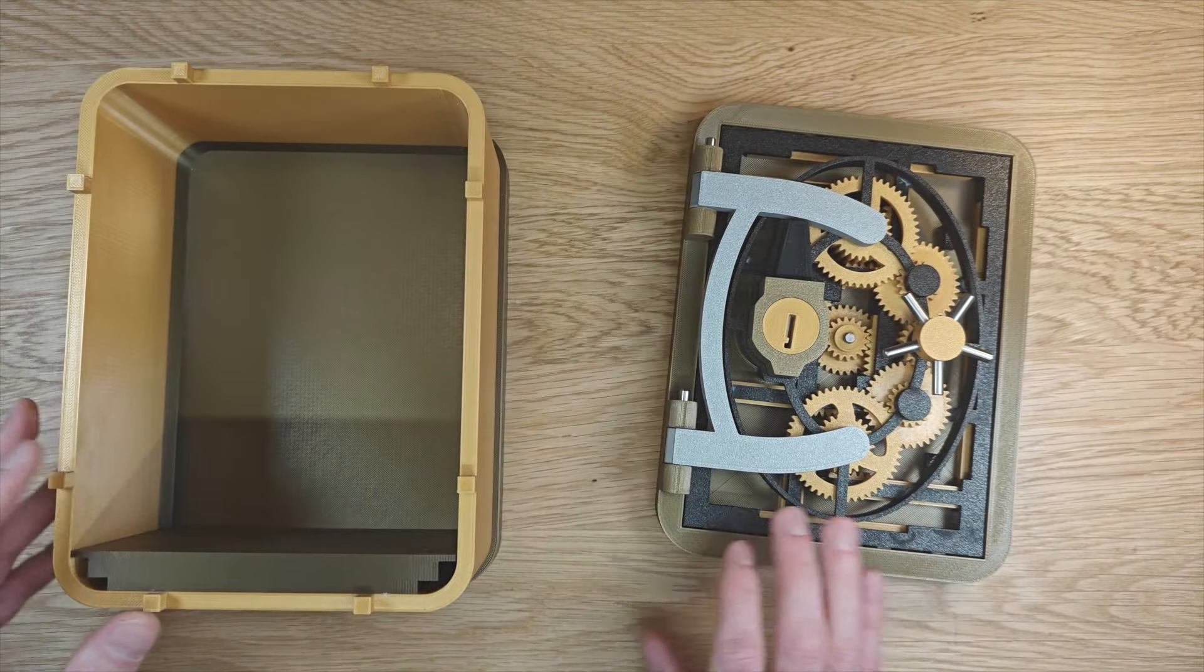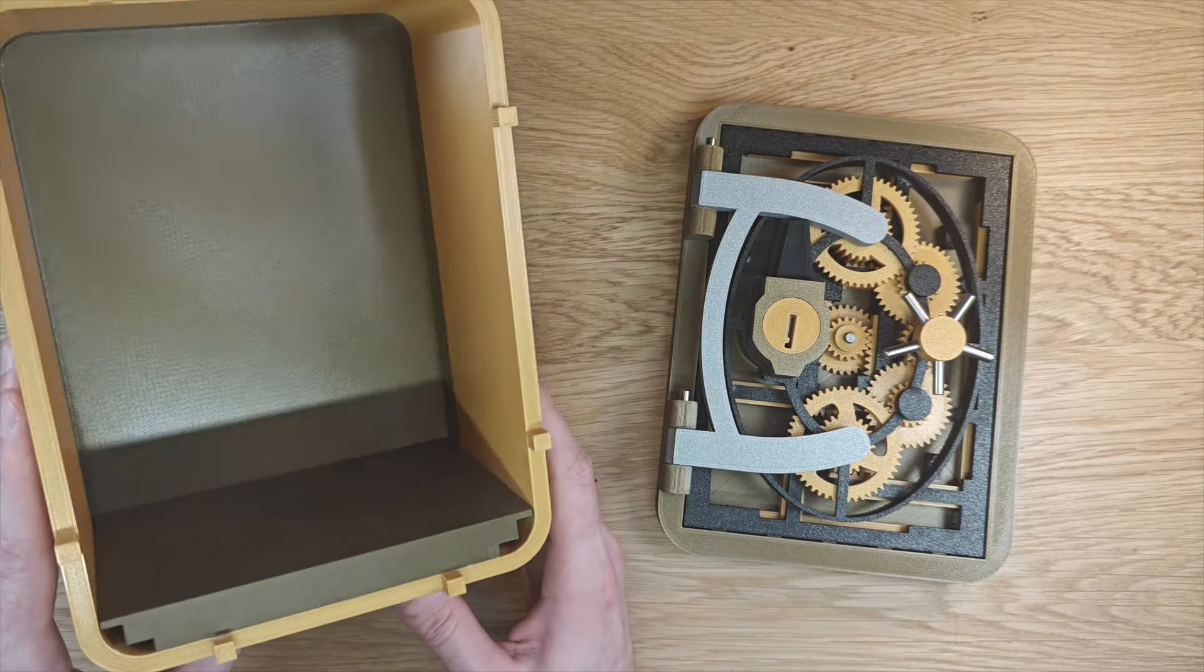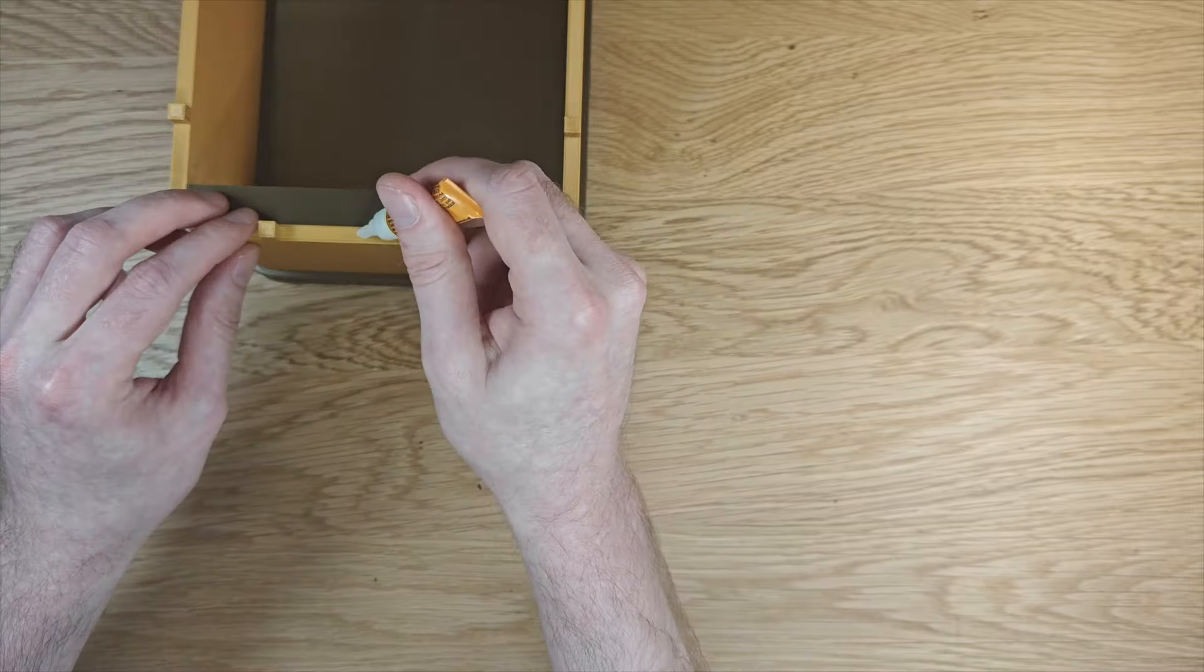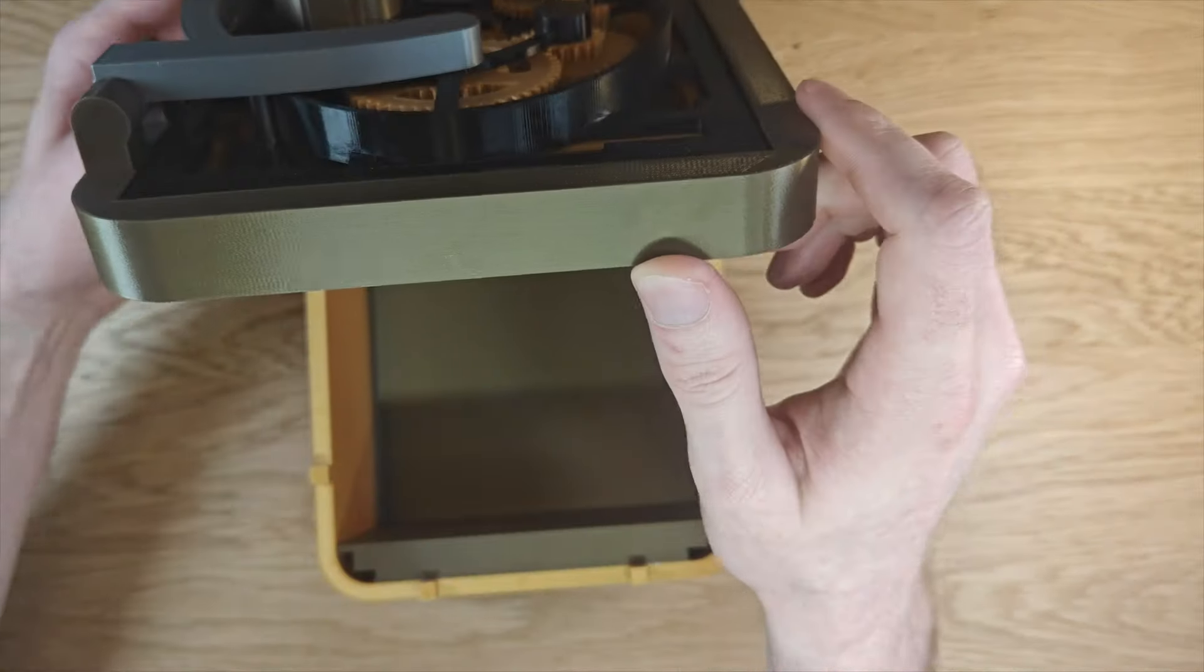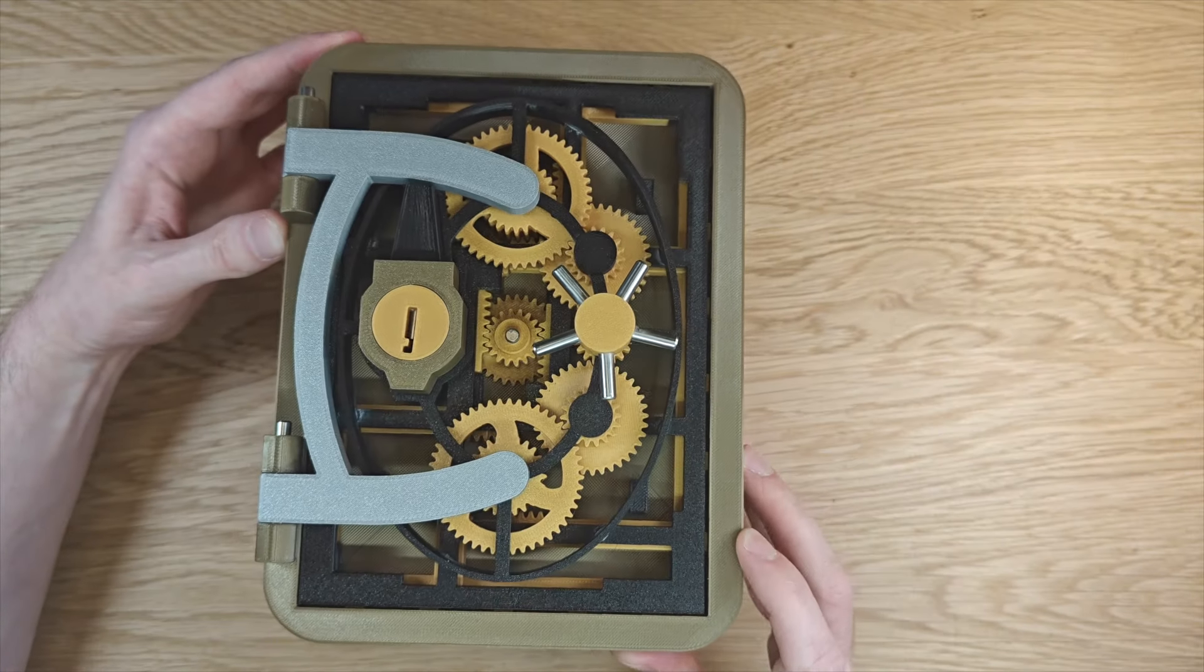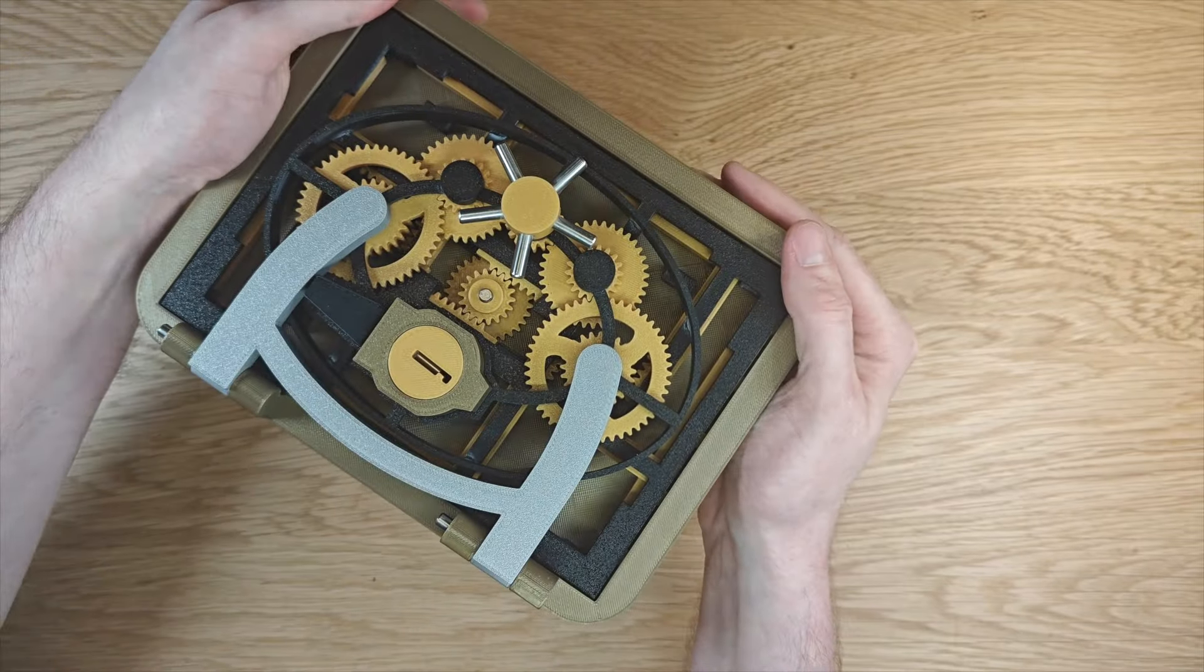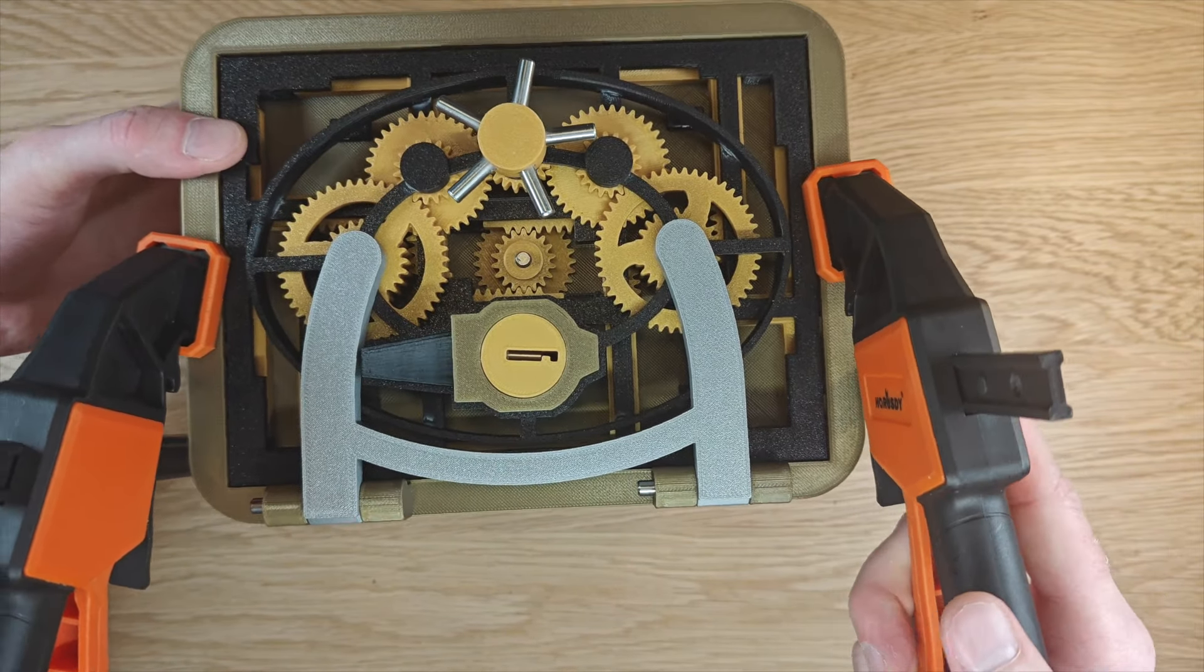The box itself prints as one piece but I included an optional false bottom so you can add some weight to counterbalance the weight of the door when it's open. Connecting the box to the door is simple: just add a bit of glue and push the two pieces together. It was pretty tight for this box but I reduced the tolerance on the files I uploaded so clamps shouldn't be necessary. And with that the vault is complete.